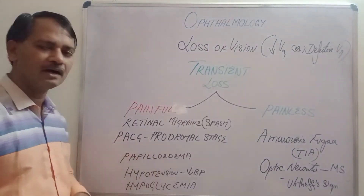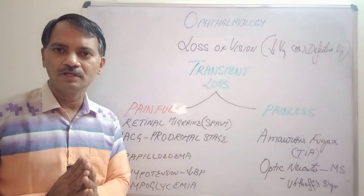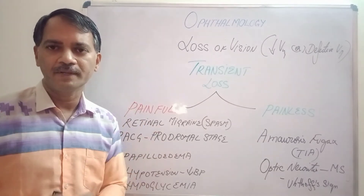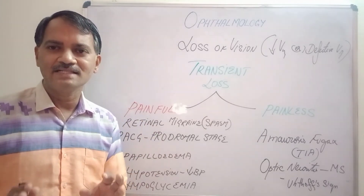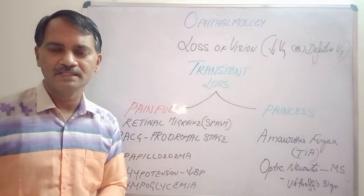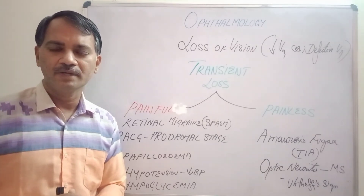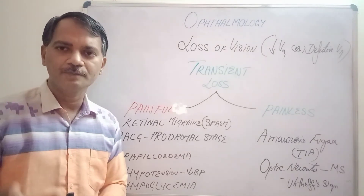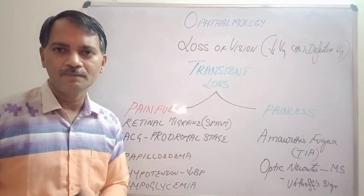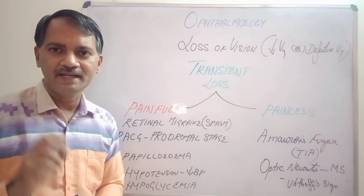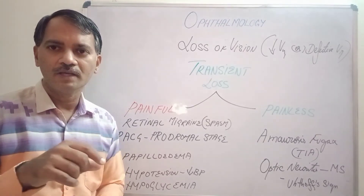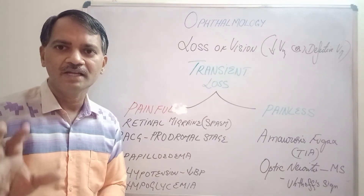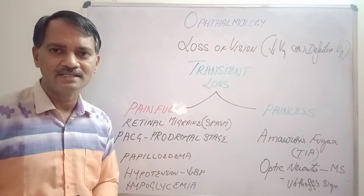Next is papilledema. Papilledema, as we have discussed, is due to increased intracranial tension. Whenever there is edema of the optic disc, there will be a transient loss of vision. You have to ask the patient whether they get a sudden drop in vision. Most patients will have that problem because the edema of the optic disc obstructs the neural flow transiently, leading to decreased visual acuity transiently.